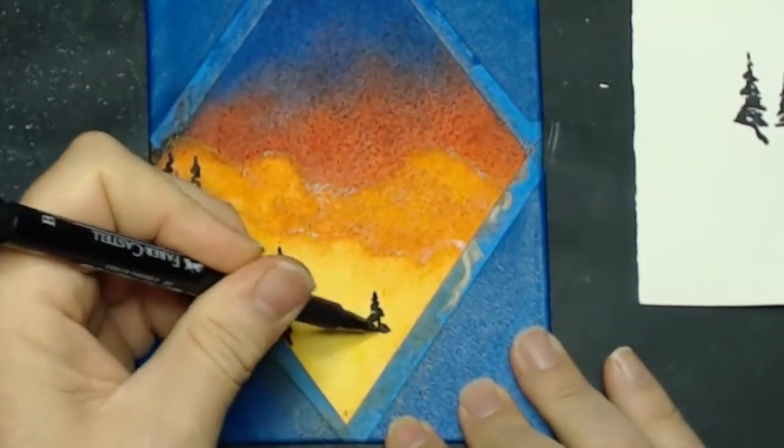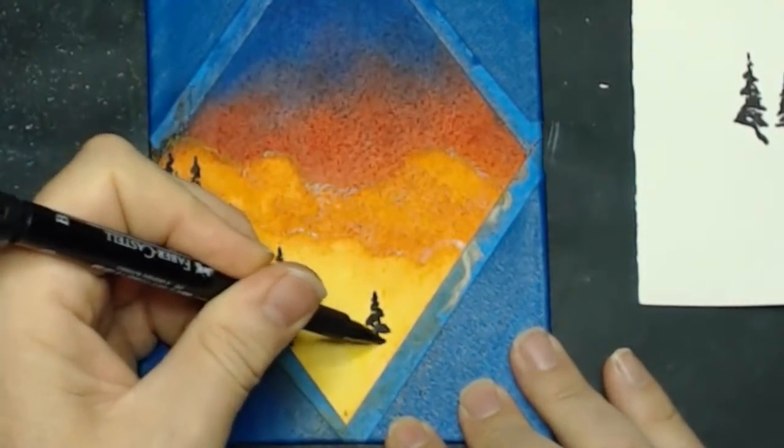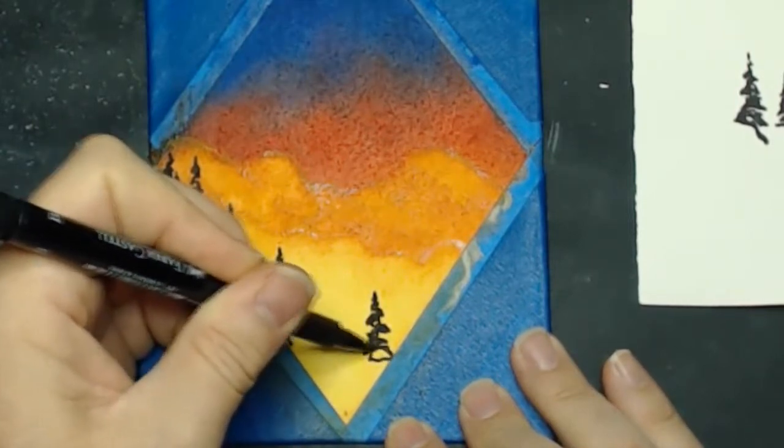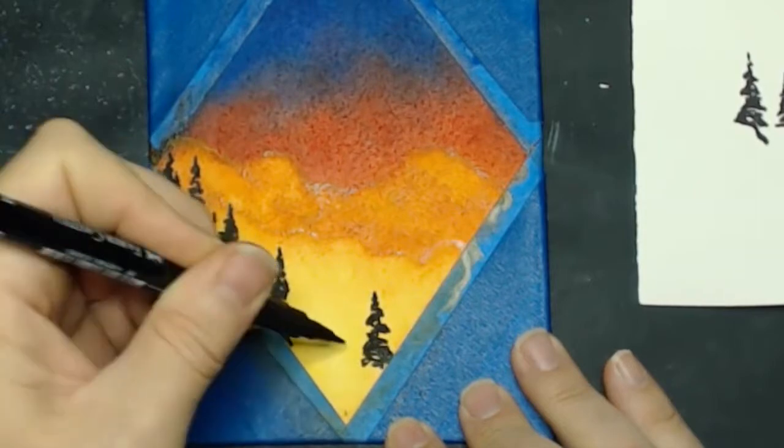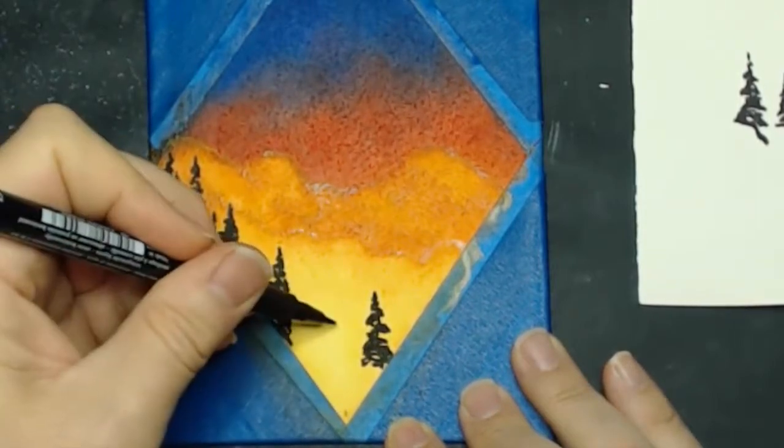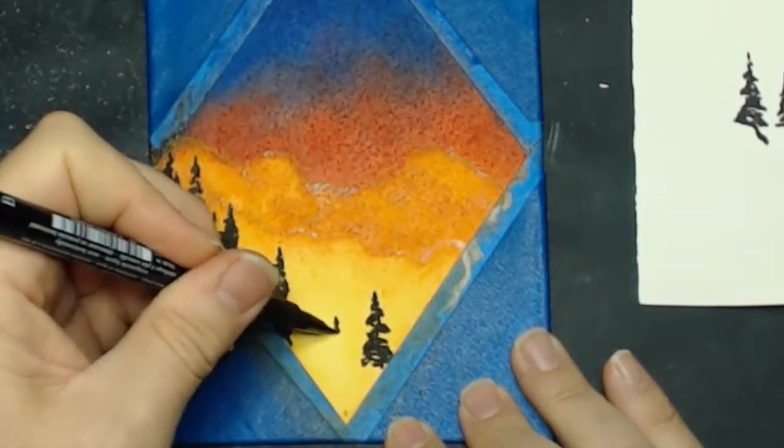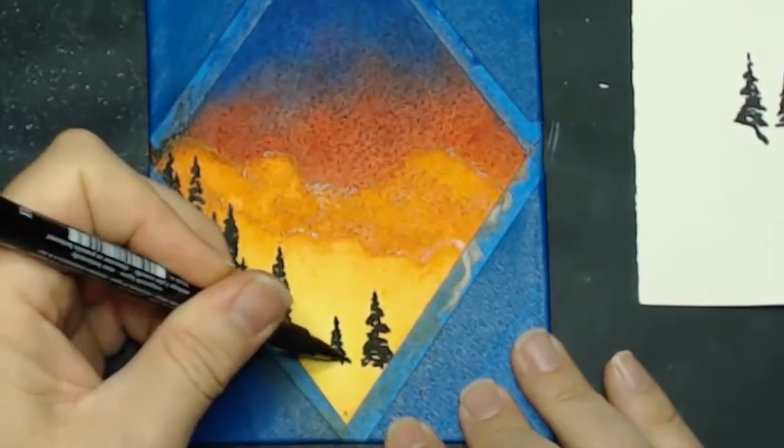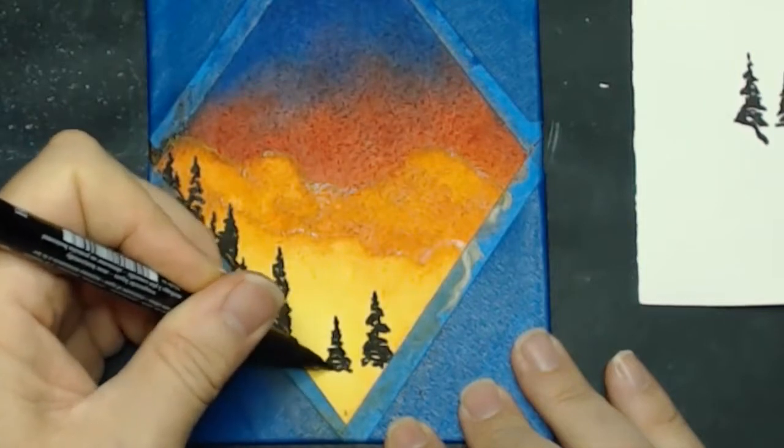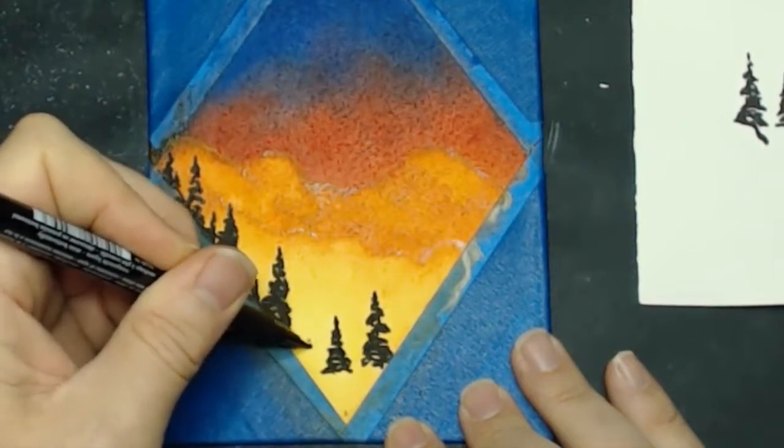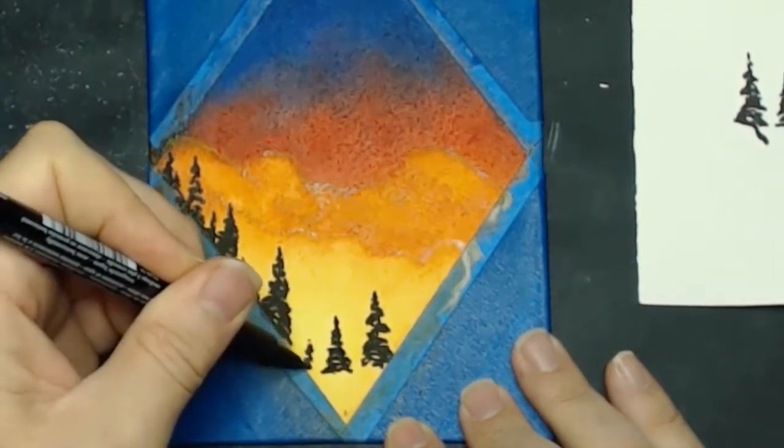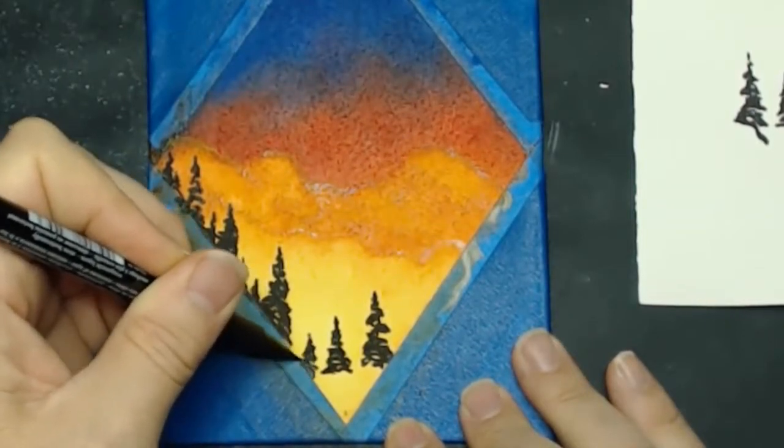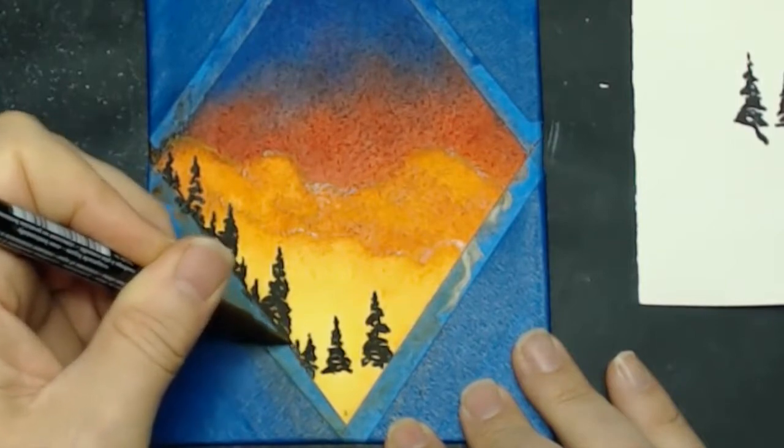And you could even put different kinds of trees in. I'm mostly doing these evergreens because they're probably the easiest to do with a marker like this. But practice on some paper and just draw in whatever feels good. Don't try to match what I'm doing here, but give yourself a good representation of trees on both sides.